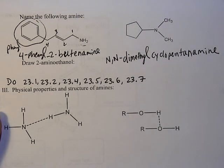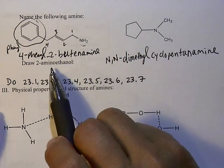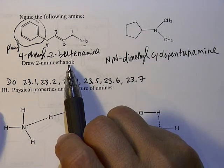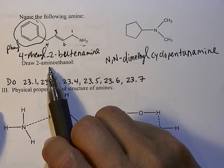And then the last nomenclature problem, which is draw 2-aminoethanol. So notice in here, you have two functional groups, the amine group and the alcohol group. And the alcohol group is higher in priority than the amine group.